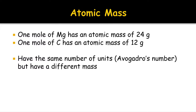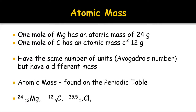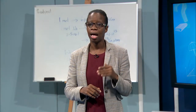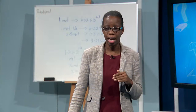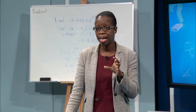If you look on your periodic table, you'll see elements with their atomic masses. For instance, magnesium has 24 at the top and 12 at the bottom. That top number is called the atomic mass. A mole of magnesium has an atomic mass of 24; a mole of carbon has an atomic mass of 12. They represent the same number of units — Avogadro's number, 6.02×10²³ — but of course they have a different mass.